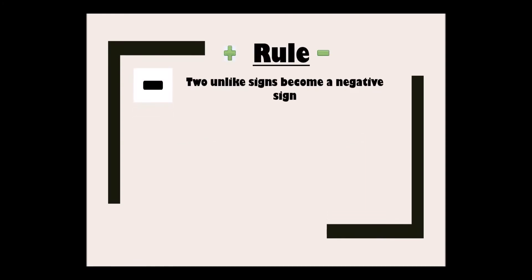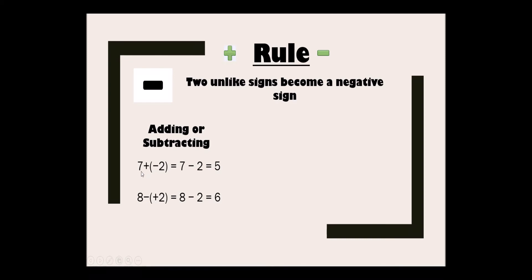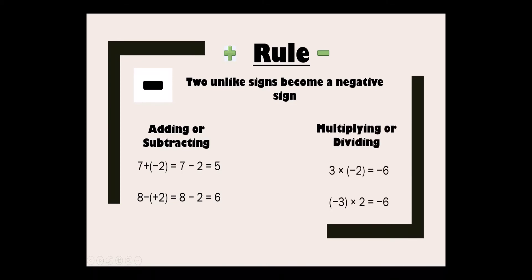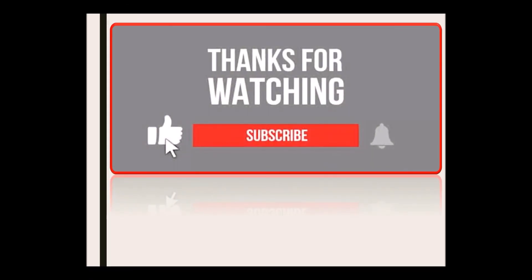For two unlike signs, the result becomes a negative sign. For adding or subtracting: 7 plus (−2) — the plus and minus become minus — so 7 minus 2 equals 5. And 8 minus (+2) becomes 8 minus 2, which equals 6. For multiplying or dividing: 3 into (−2) becomes minus 6, and (−3) into 2 also becomes minus 6. So a positive and a negative give a negative.